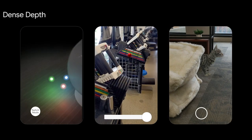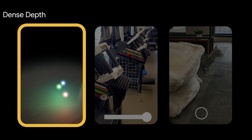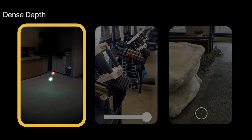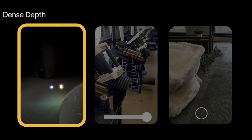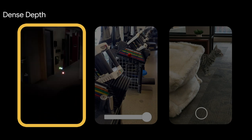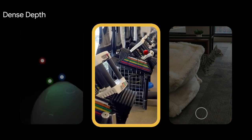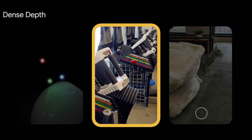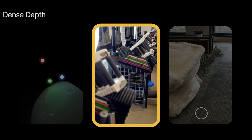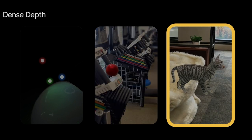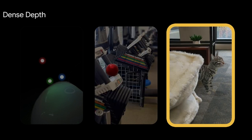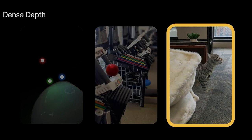Dense Depth ships a depth texture to the GPU and renders screen space effects with fragment shaders. It is useful for many computational photography tasks, such as relighting the world with virtual light sources, simulating a DSLR camera with aperture effects like depth of field, and occluding virtual objects with the physical environment.